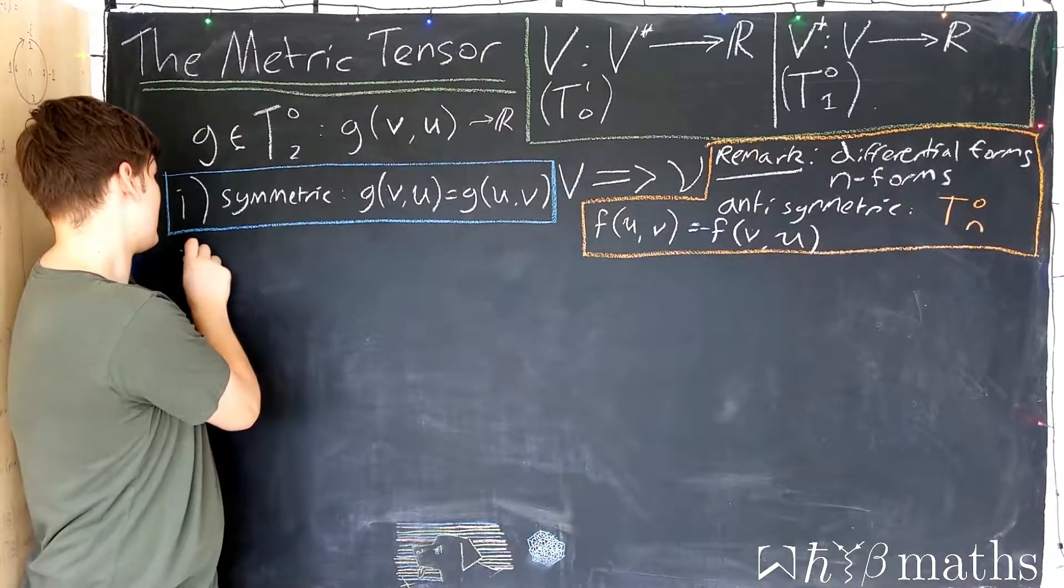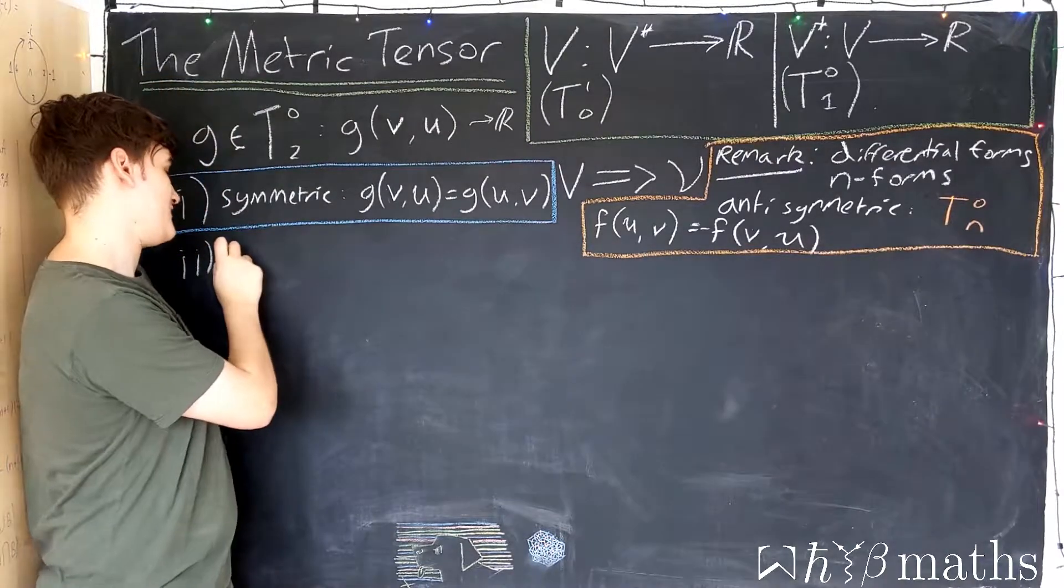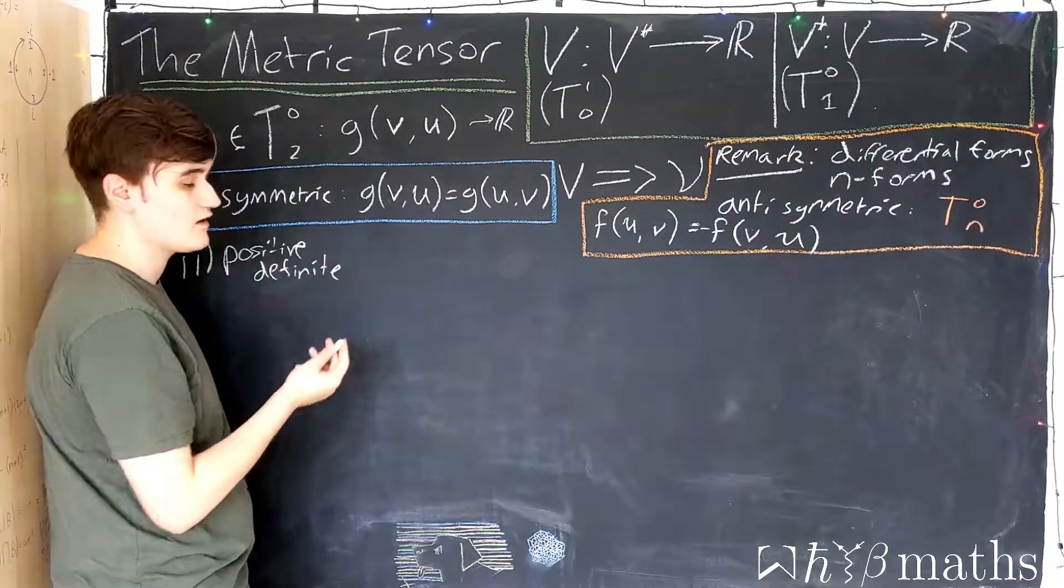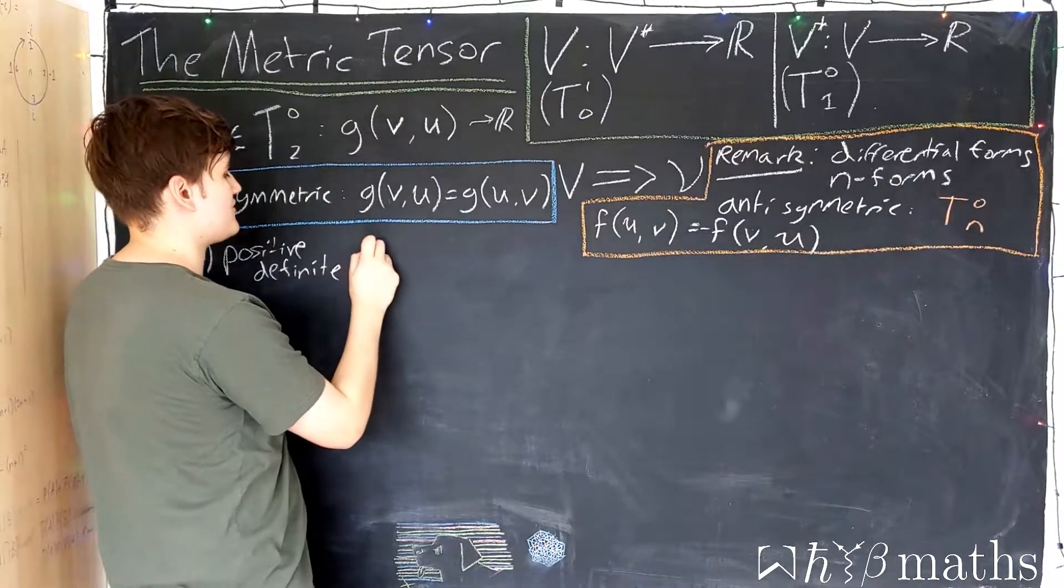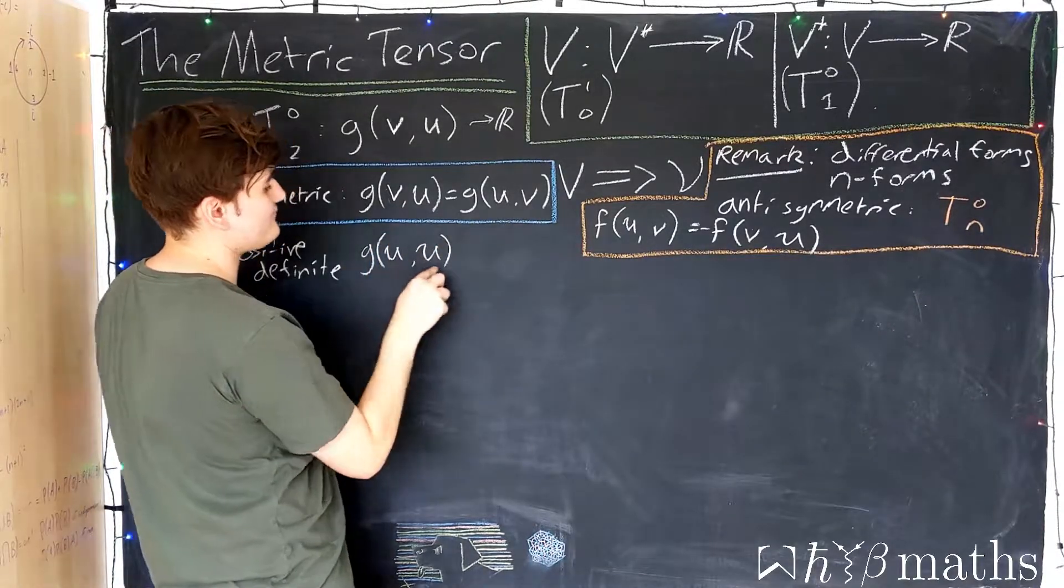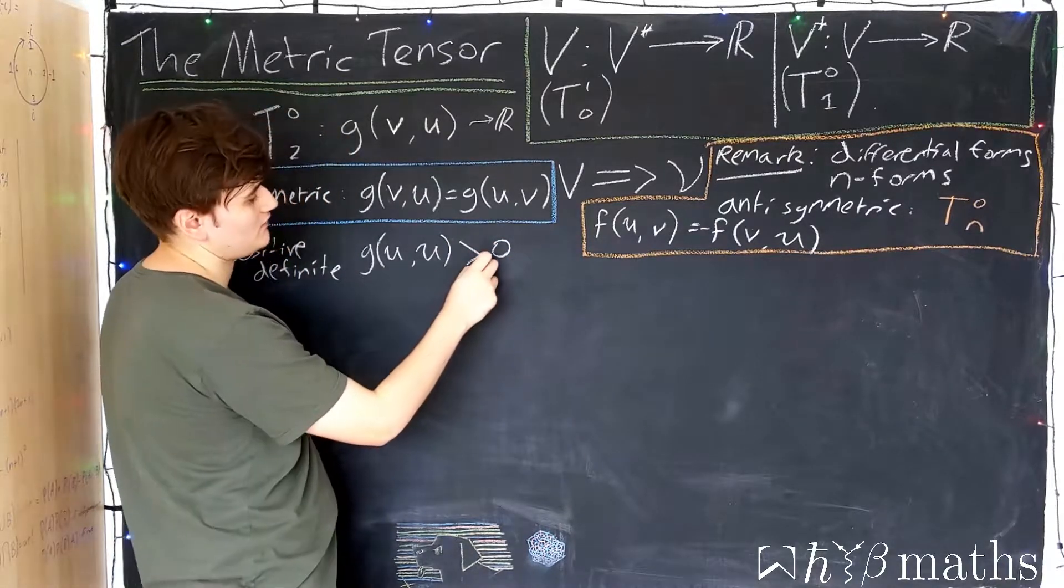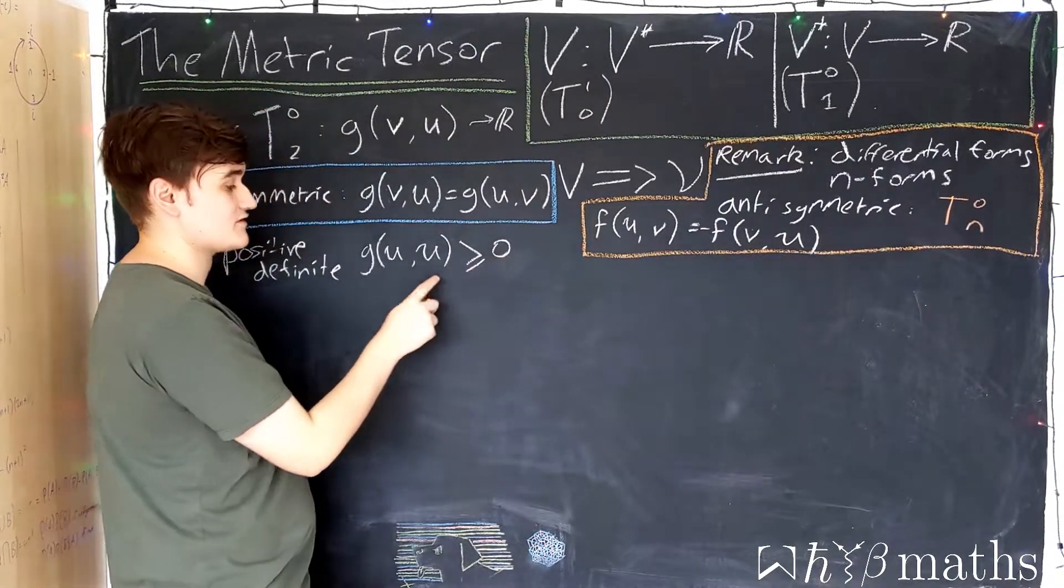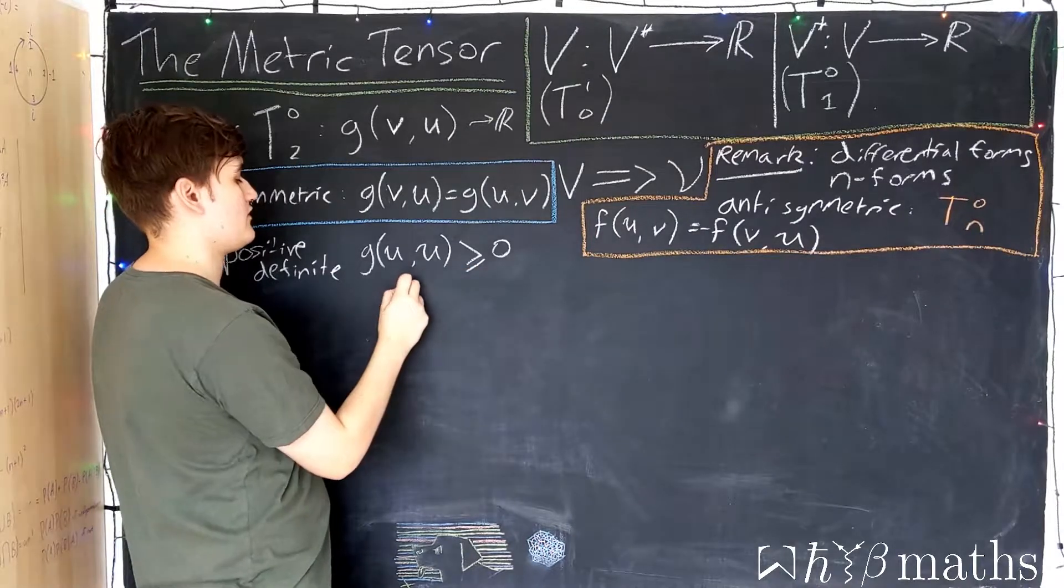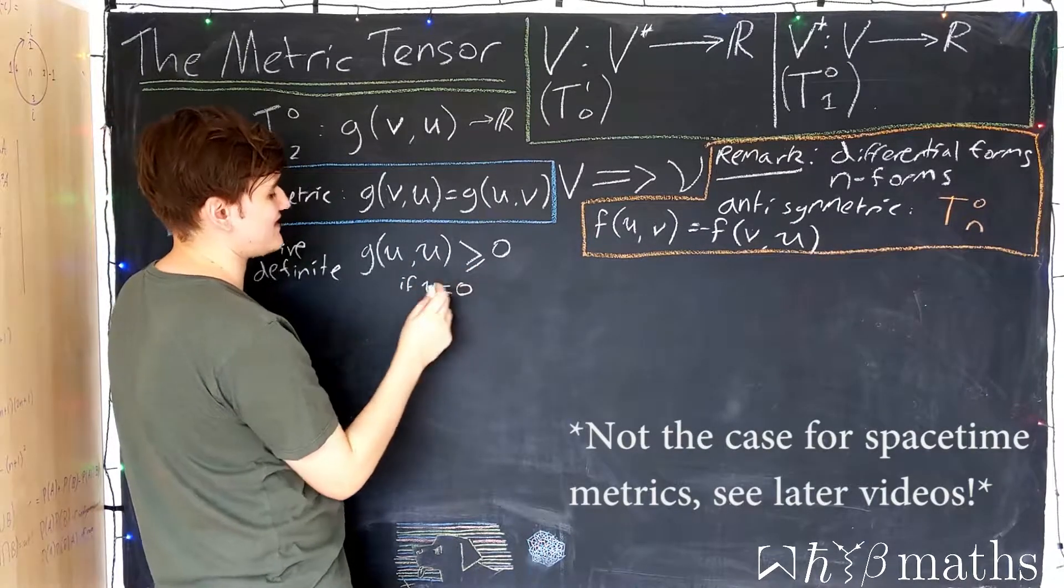And then the second property that we must have is positive definiteness, meaning that if you plug into the metric any vector and the same vector, this must be greater than zero - technically greater than or equal to. So it can only ever be equal to zero if the vector is actually zero.